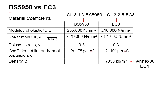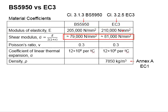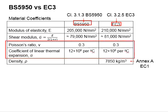Next, regarding material coefficients, the modulus of elasticity differs slightly between BS and Eurocode 3 — 205,000 N/mm² in BS compared to 210,000 N/mm² in Eurocode 3. Because of this difference, the shear modulus G will also be different. However, both BS and Eurocode 3 agree on the Poisson's ratio and the coefficient of linear thermal expansion.